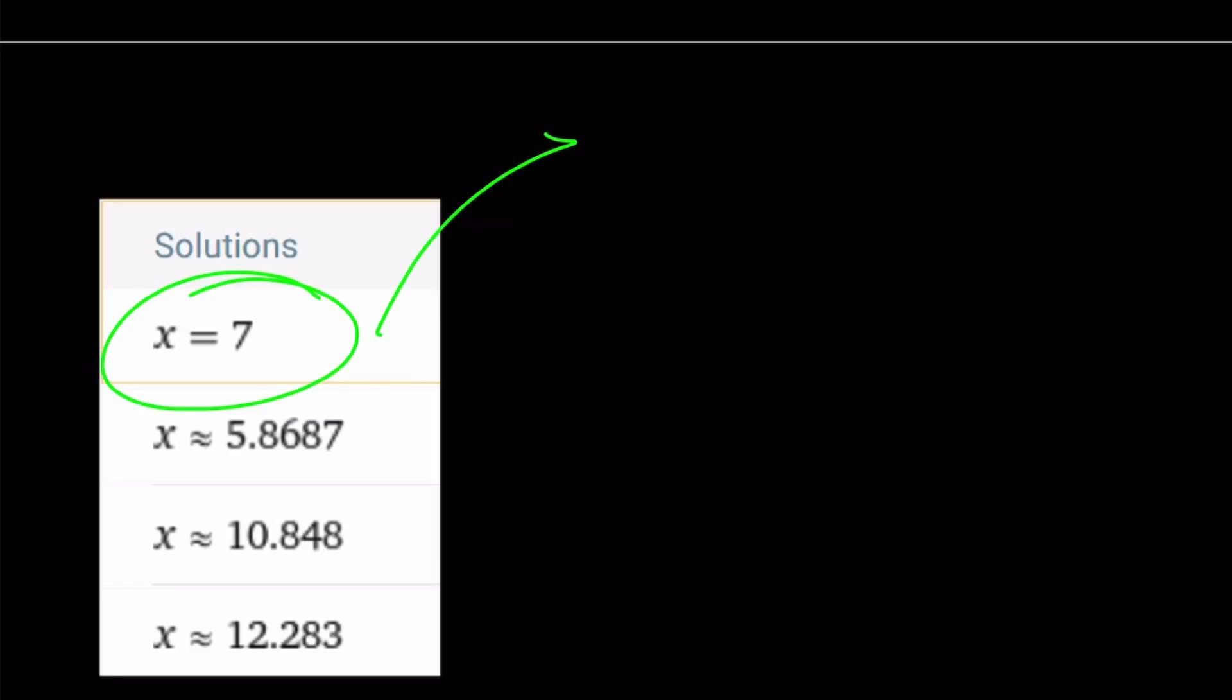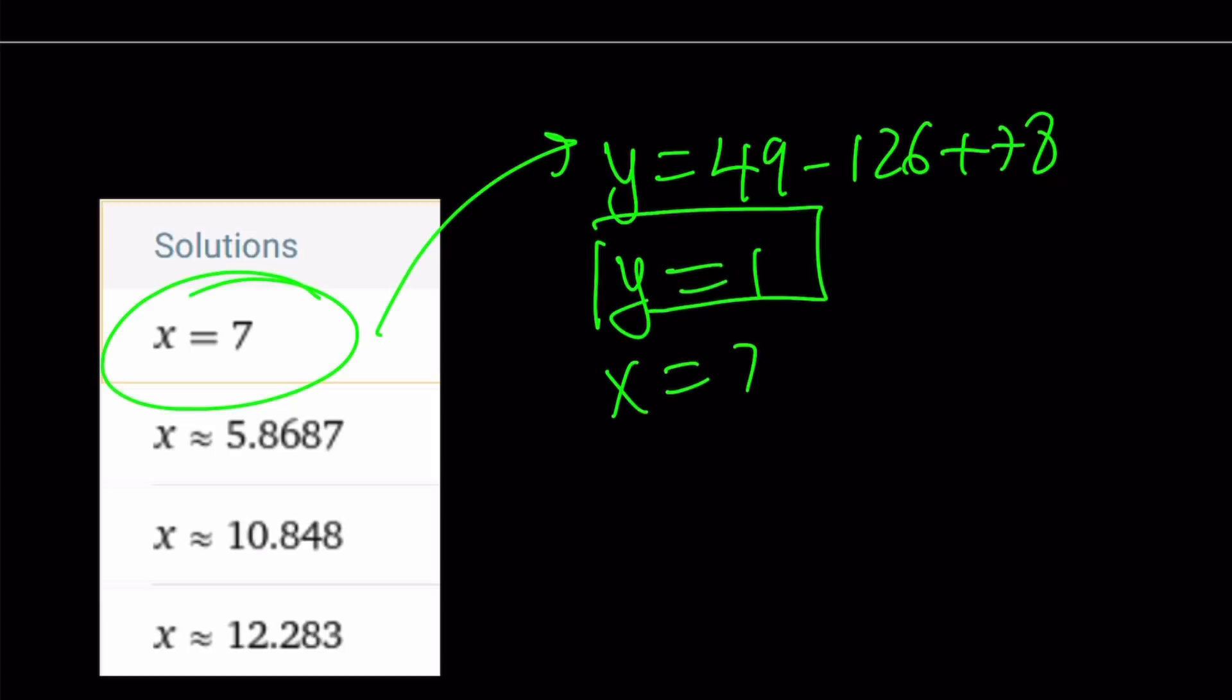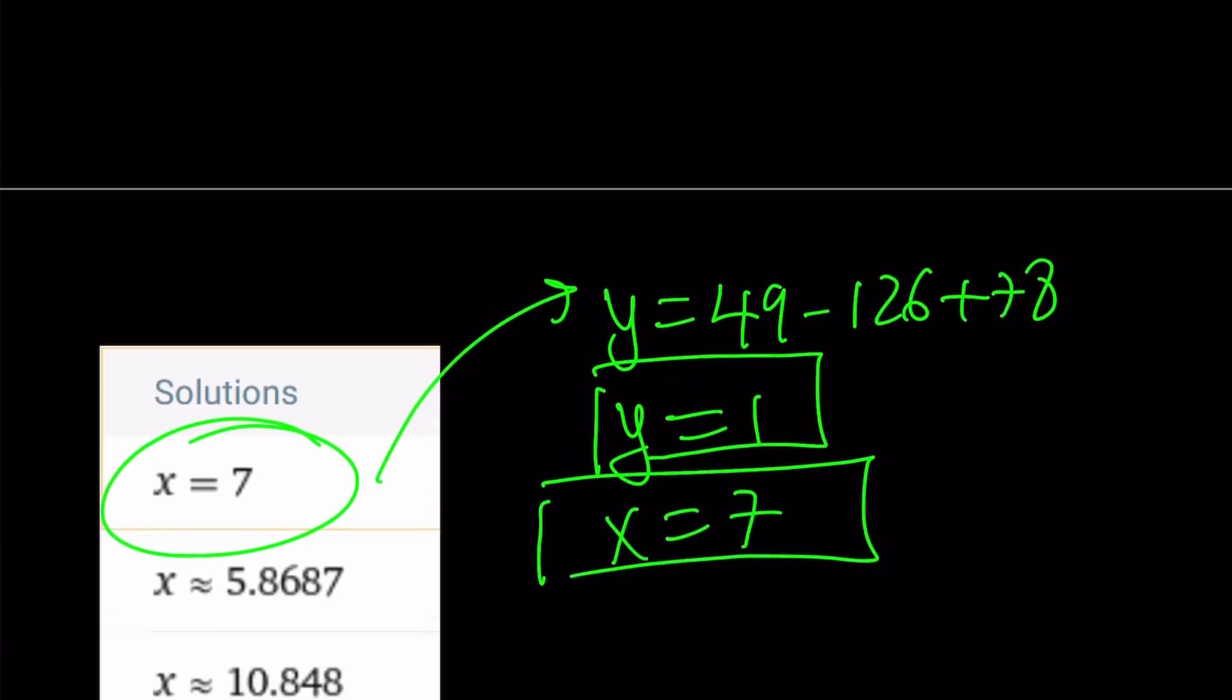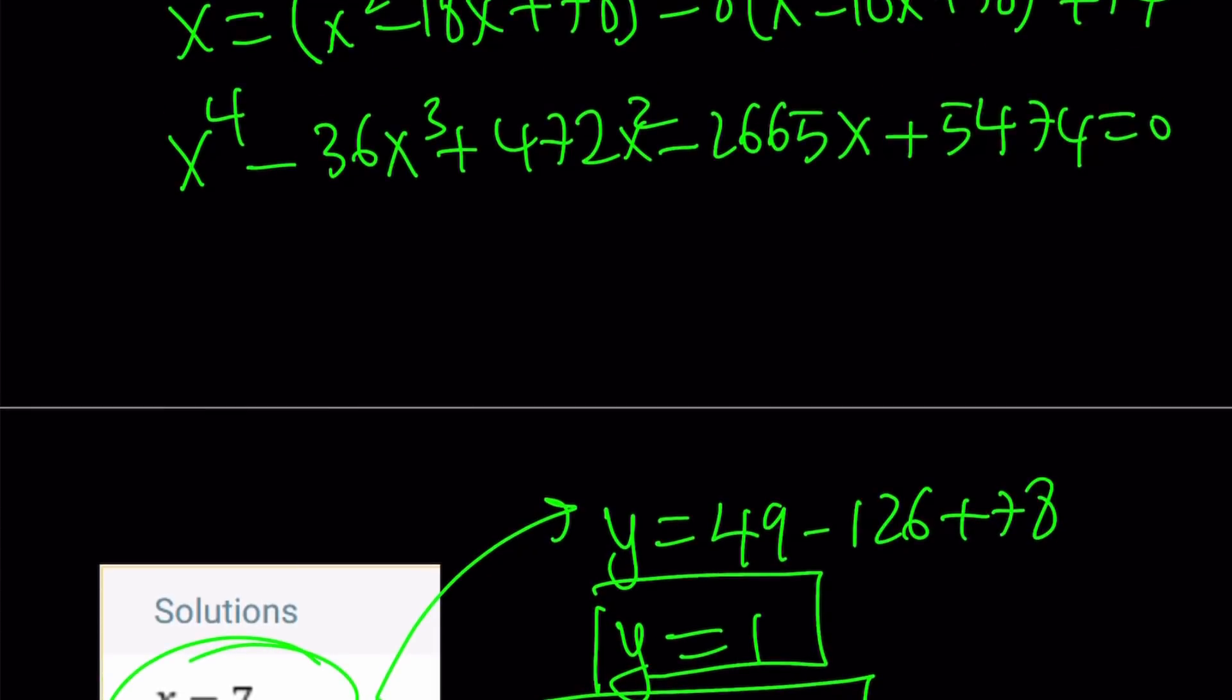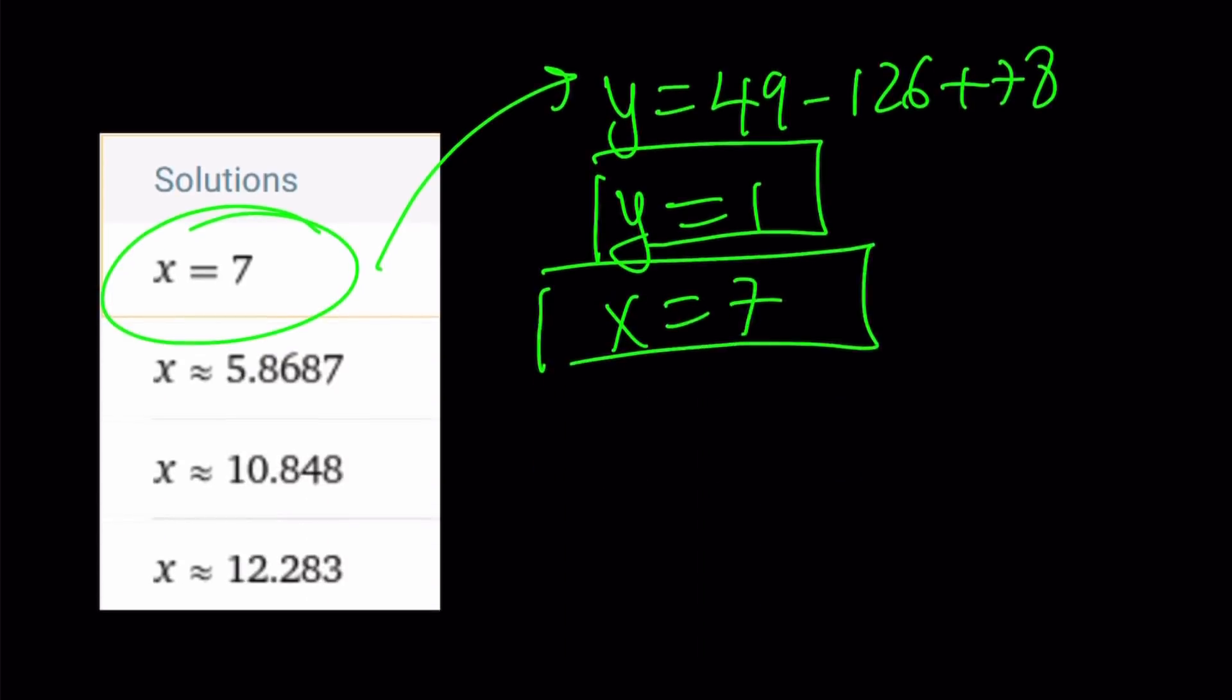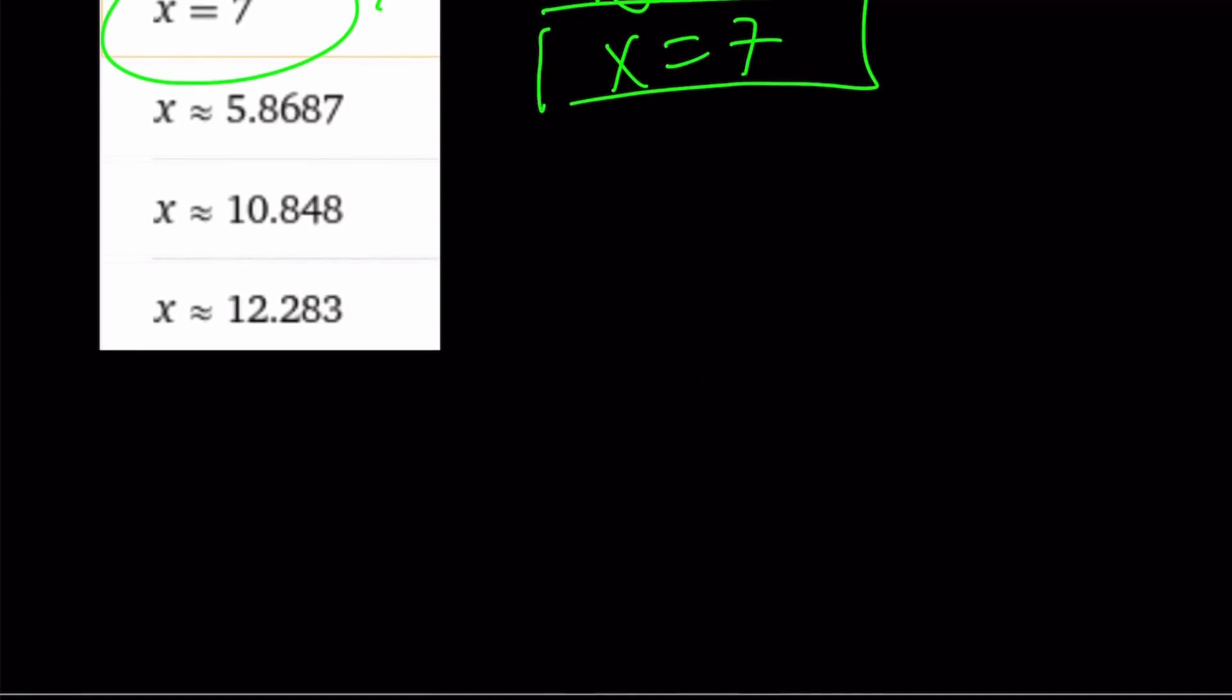Yay. So, but the only root that I'm going to go by is x equals 7. And if x is equal to 7, y is just going to be if you substitute 49 minus 126 plus 78. Don't worry, I checked the work for you. And you get y equals 1. So we have x equals 7 and y equals 1 for the solution to the system. Why are there four solutions? Because that's quartic. Why is 7 the only one? Because the others are extraneous and problematic and so on and so forth.